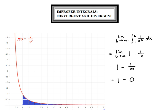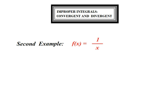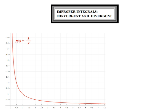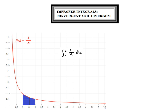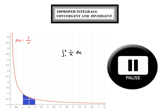Let's take a look at a second example. It's going to be very similar to the first example, but with a different result and different conclusion. The second example is f of x equals 1 over x. Here is the graph, very similar to the previous graph. And we are going to look at the definite integral from 1 to 2 — there's the area under the graph.